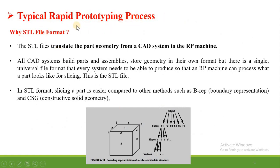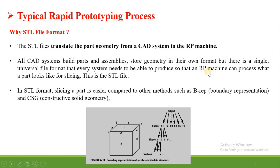Why are we using the STL file format in typical rapid prototyping? The STL file translates the part geometry from a CAD system to the RP machine. This file helps transfer information from a CAD file into the STL format that is useful for rapid prototyping machinery. All CAD systems store geometry in their own file format, but there is a single universal file format — the STL file — that every system needs to produce so that an RP machine can process and slice the parts. RP machines do not understand native CAD file formats, so we need to convert them into STL.